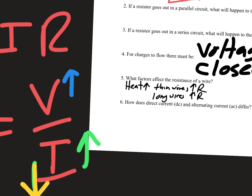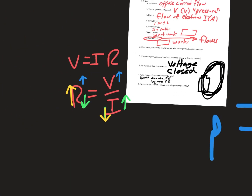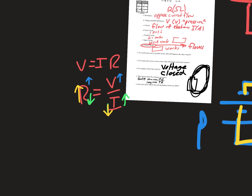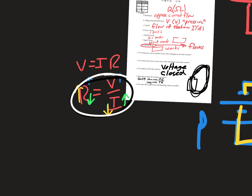These heat, wire thickness, and length factors are external factors beyond Ohm's law, which means Ohm's law isn't a perfect law — there are other things that affect this relationship.